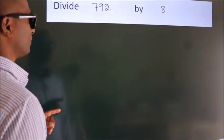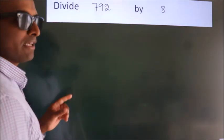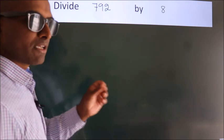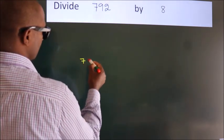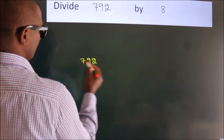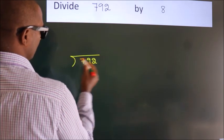Divide 792 by 8. To do this division, we should frame it in this way: 792 here, 8 here.